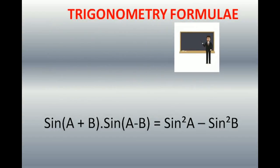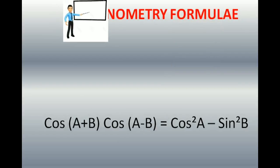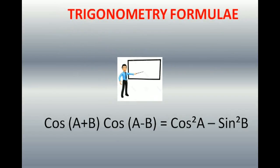Now some special formulas which if remembered make life easy. Sin(A+B) · sin(A−B) = sin²A − sin²B. You will encounter many problems where sin(something + something) · sin(something − something) is given — you can directly write sin²A − sin²B. But cos is a little different: cos(A+B) · cos(A−B) = cos²A − sin²B, not cos²A − cos²B. Always remember this — don't make a mistake.